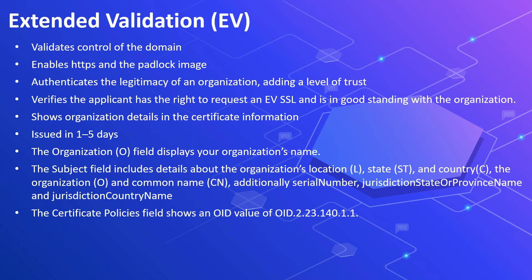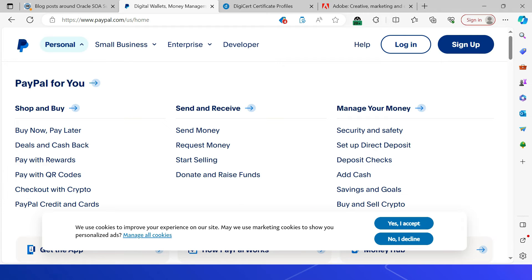Extended Validation (EV) SSL validates control of the domain, enables HTTPS and the padlock, authenticates the legitimacy of an organization, and verifies the applicant has the right to request an EV SSL. Organization details are stored in the certificate information. EV certificates are issued in one to five days due to additional verifications. The subject field includes organization location, state, country, serial number, jurisdiction state or province name, and jurisdiction country name. The certificate policy OID value is 2.23.140.1.1.